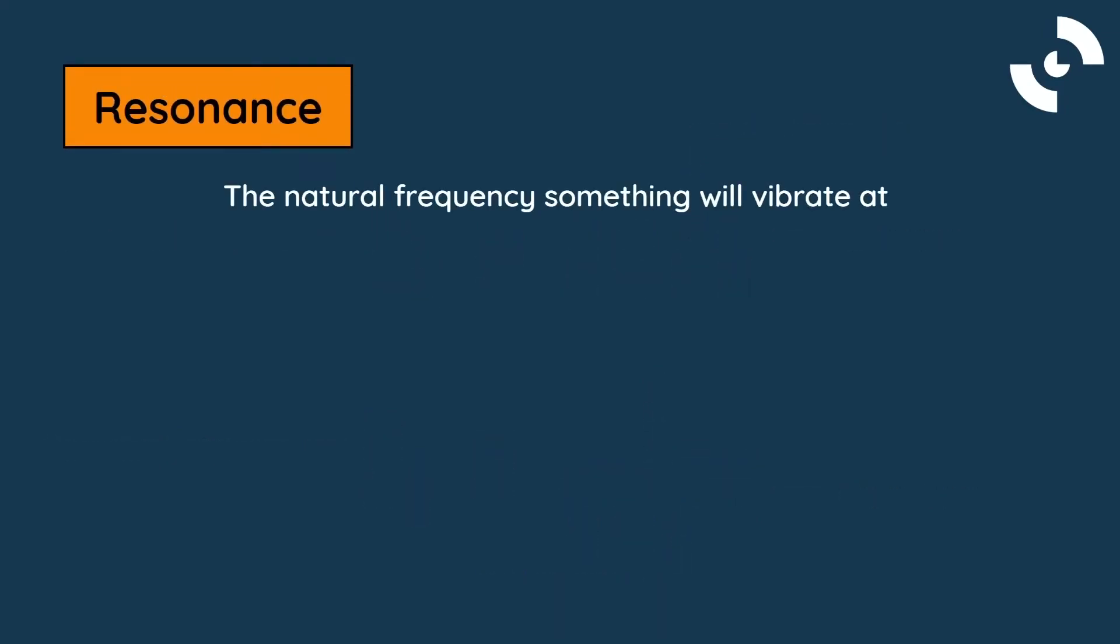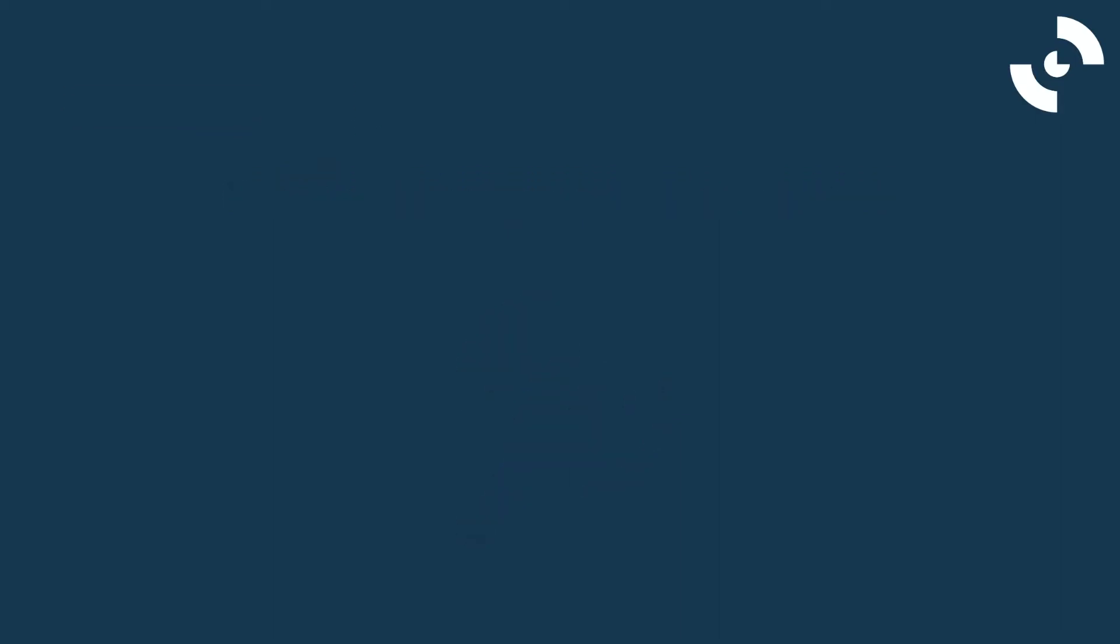Resonance is described as the natural frequency that something will vibrate at. For example, a tuning fork is designed to have a resonant frequency at a specific musical note. Similarly, our LC circuit will oscillate at its resonant frequency.